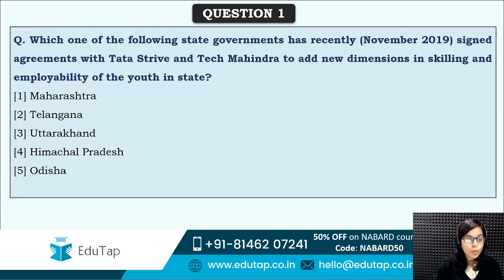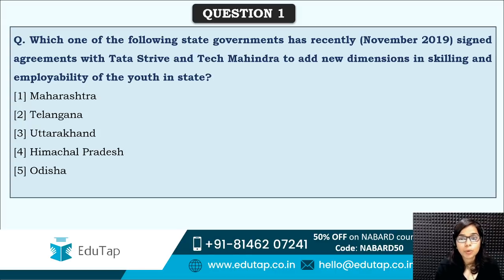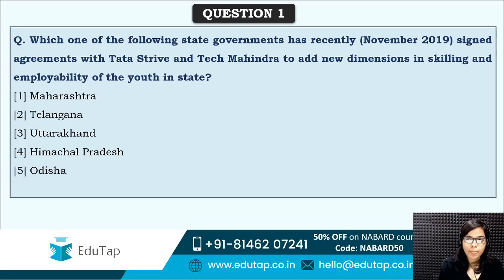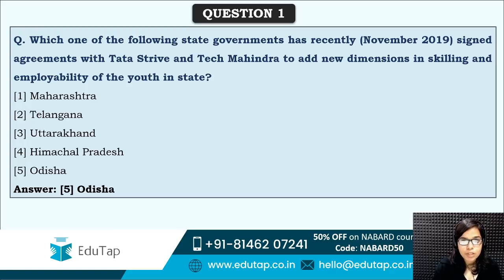The first November question: which of the following state governments has recently signed agreements with Tata Strive and Tech Mahindra to add new dimensions in skilling and employability of the youth? It is Odisha which has signed an agreement with Tata Strive and Tech Mahindra so they can add new dimensions in skilling and employability of the youth. Odisha is the correct answer.